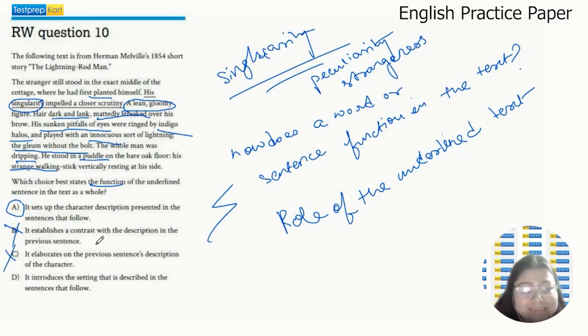It introduces the setting that is described in the sentences that follow. The sentences that follow the underlined sentence do not describe the setting. Rather, they describe the man himself. So setting would imply the surroundings of the man, the cottage where he was standing. We are not talking about the cottage. We're talking about the man himself. So D is incorrect, which leaves us A.